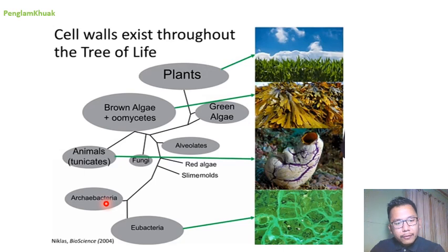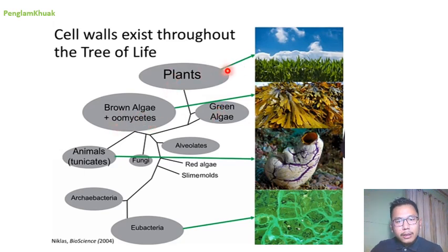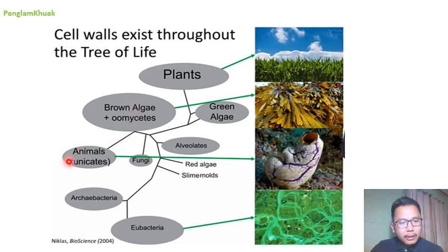From archaebacteria we evolved and formed other organisms: slime mold, red algae, alveolates, fungi, animals, tunicates, brown algae, oomycetes, green algae, and plants. In plants, almost all of them have cell wall. Green algae and brown algae also have cell wall. In case of animals, one particular organism — tunicates — also has a cell wall.